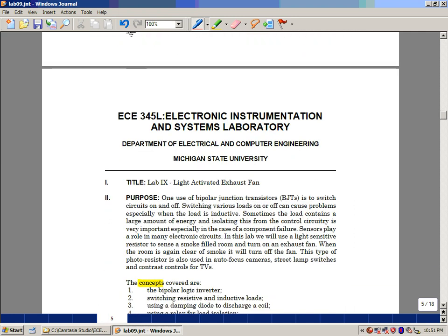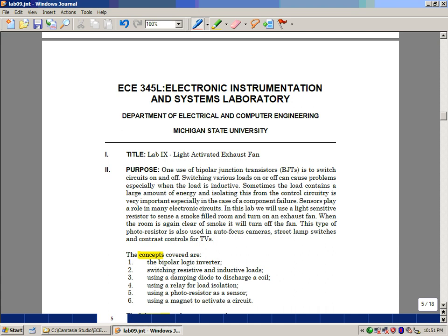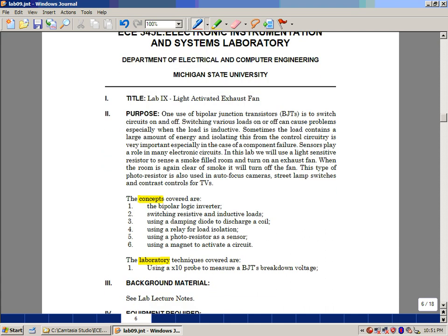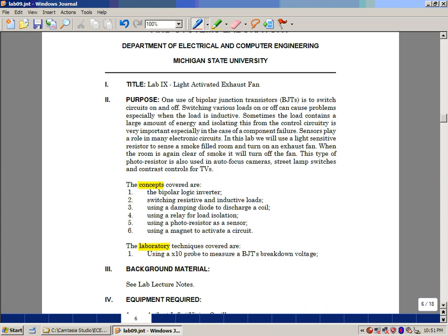In this lab, we're going to take a look at using a bipolar transistor as a switch, look at some of the problems of switching inductive loads, and then go on and put together a circuit that would allow us to turn a fairly large current fan on and off. Some of the concepts we're going to use: using a damping diode to help discharge a coil, using a relay for load isolation, a photoresistor as a sensor, and we're going to use a magnet to also activate the circuit.